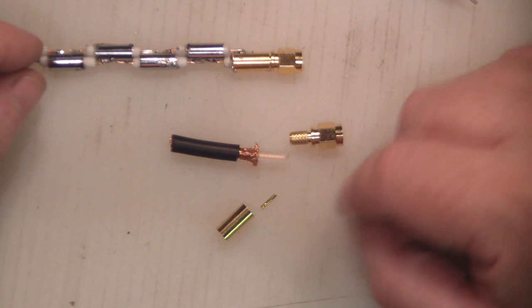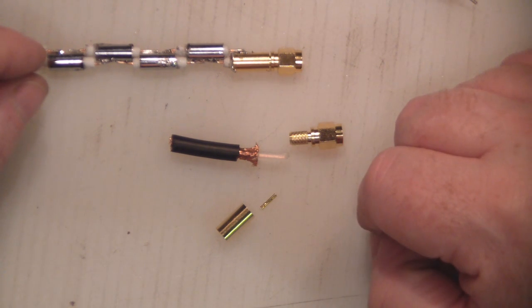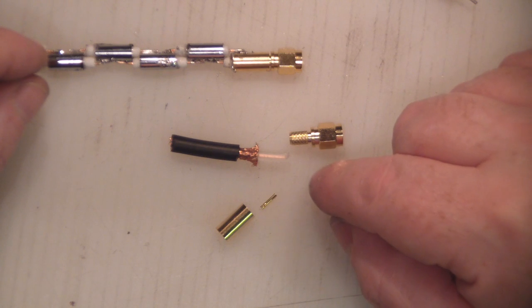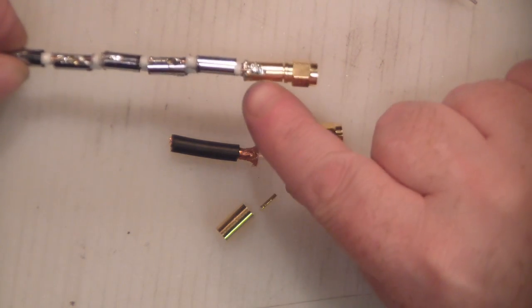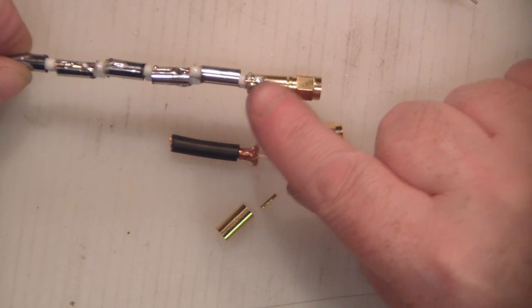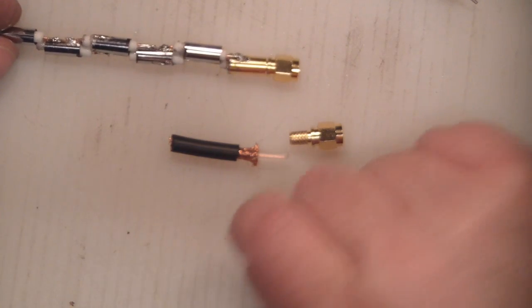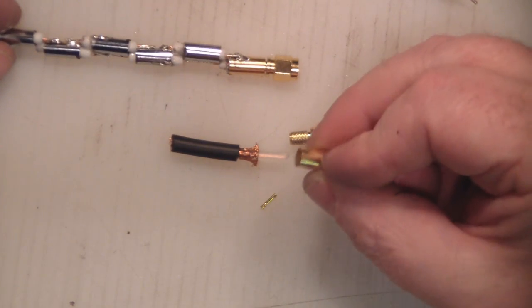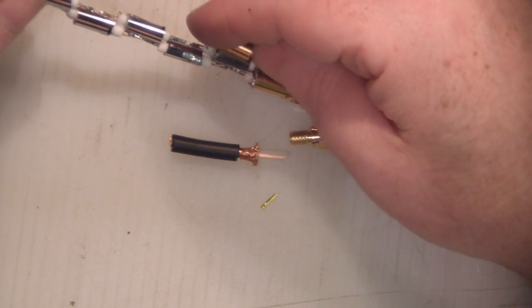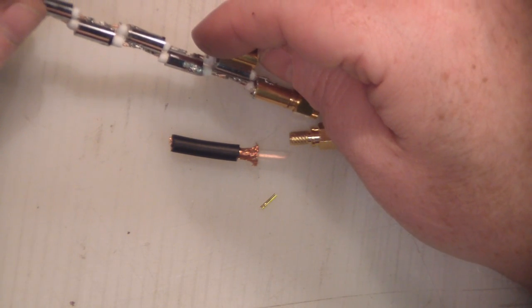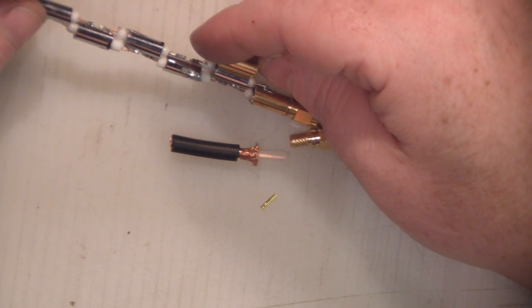What we're going to use is an SMA connector, this is a female one. Now normally these are designed to be crimped on but we're not going to do that, we're going to actually solder it on like this one here. This outer shield part which is normally crimped on the SMA connector is as near as damn it to the wavelength where we've cut off for these little shields.